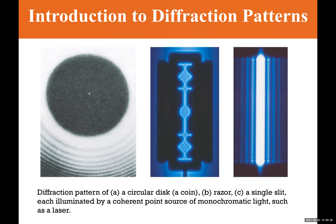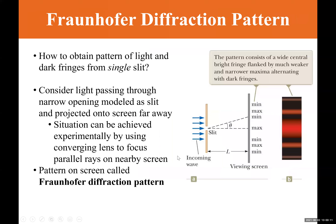There are more examples of diffraction including a circular disk, a razor edge, and a single slit. For the single slit analysis, we assume the slit is illuminated by a coherent point source of monochromatic light — meaning the wavelength doesn't change. This could be green, blue, yellow, or any single-color light. We'll now look at Fraunhofer diffraction patterns in greater detail.